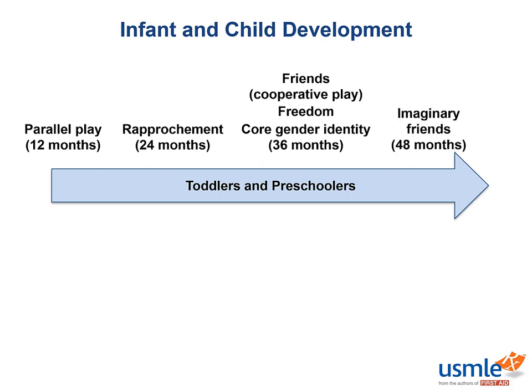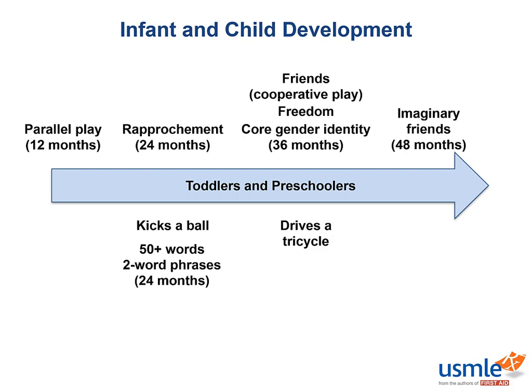At four years, toddlers can begin to have imaginary friends. As far as motor and verbal milestones, at 24 months, toddlers can kick balls around and have about a 50-word vocabulary. They can also use two-word phrases such as "my ball." By three years, they are scooting around on tricycles, and their vocabulary has expanded to about 1,000 words. At three, they can also use three-word phrases like "I want ball." At four years, kids are able to tell detailed stories.